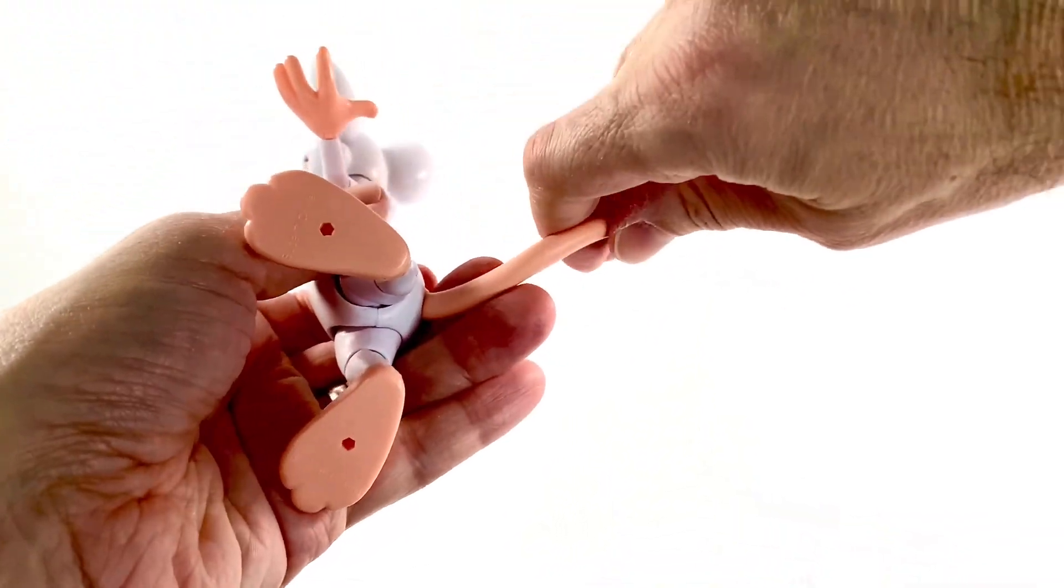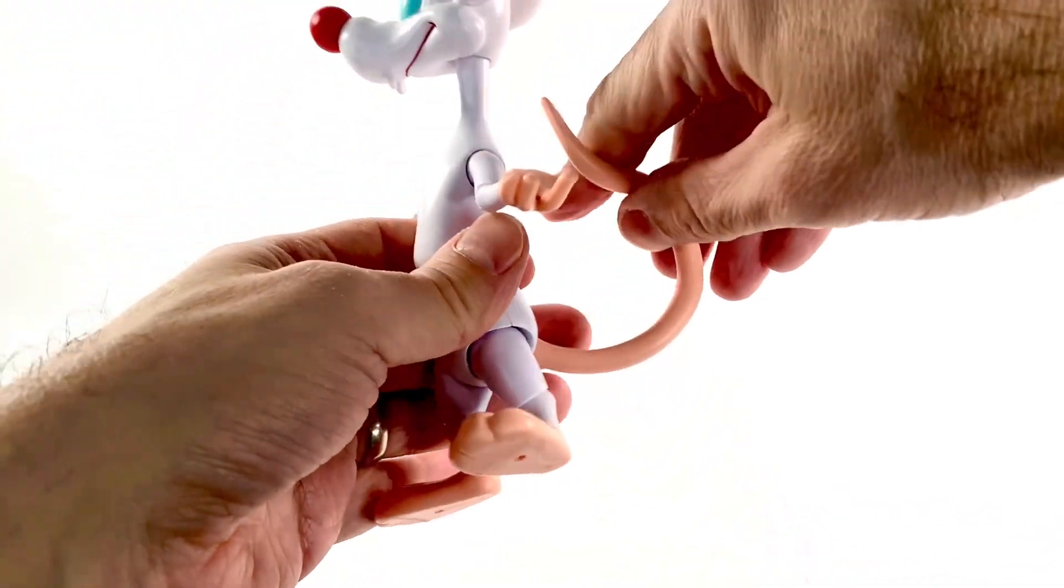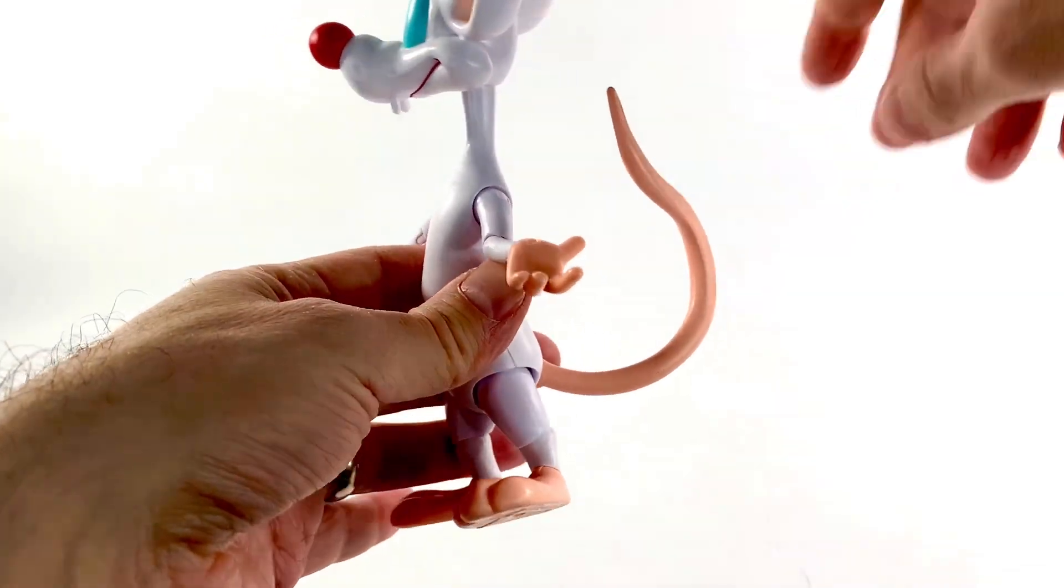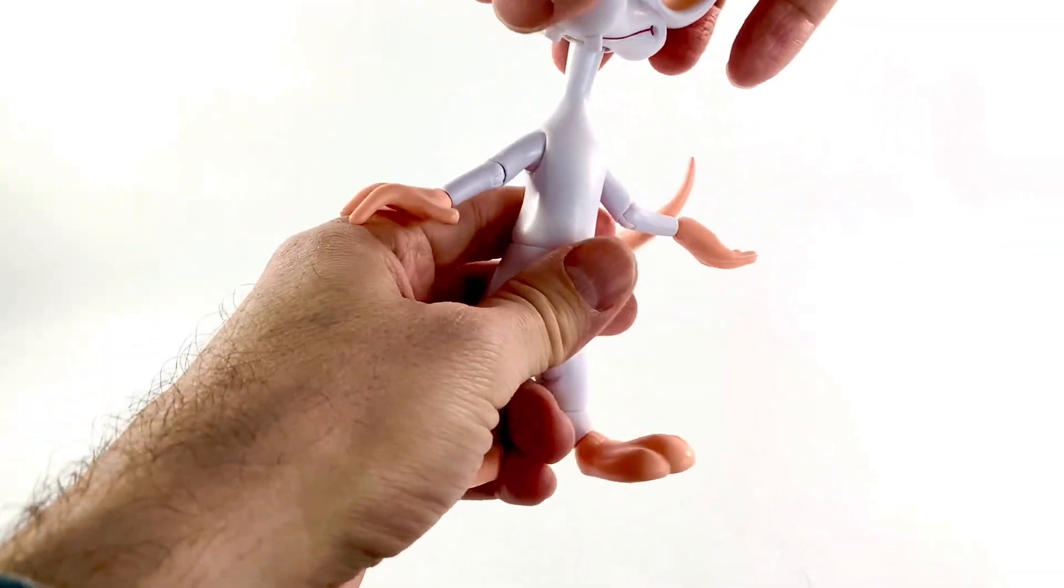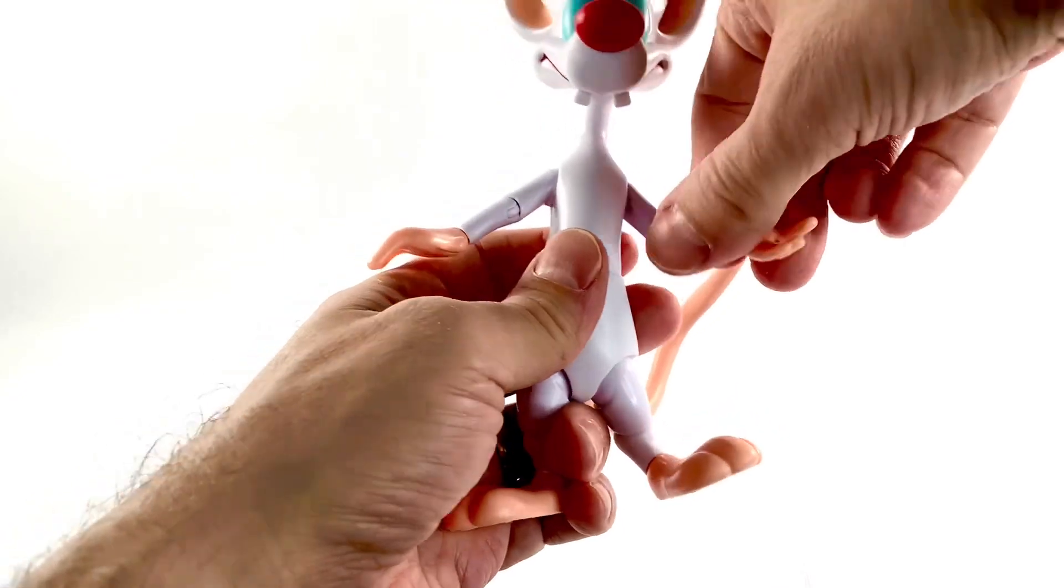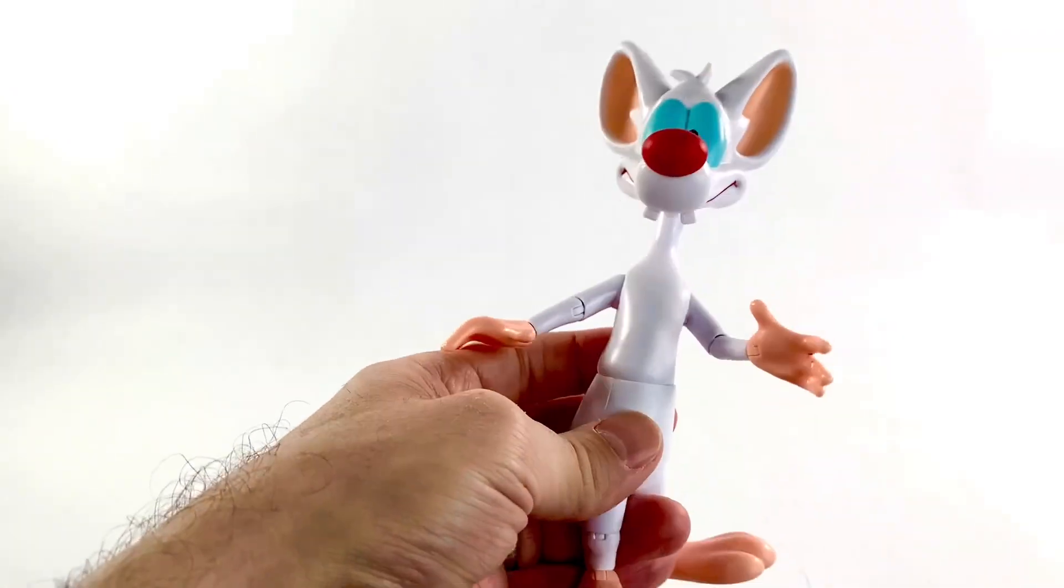And then the tail is on a big old ball joint as well. I don't think it's a bendy wire in here. So don't try to do anything that might break your tail. But the articulation here is okay. It works. It works.